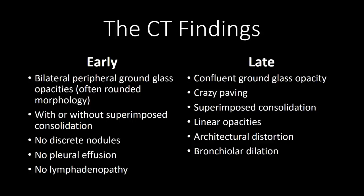Early in the disease process, the pattern seen on CT tends to be dominated by bilateral peripheral ground glass opacities. These ground glass opacities tend to have a rounded morphology but are not necessarily nodules with well-defined margins. Consolidation can be superimposed on the ground glass opacities, but earlier cases have a lower incidence of consolidation and tend to be ground glass predominant.